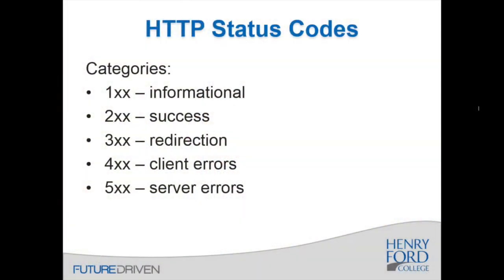There are five categories of HTTP status codes. 100-level messages are informational, 200s indicate success, 300-level messages deal with redirection, 400s deal with client errors, and finally 500 errors are server errors.